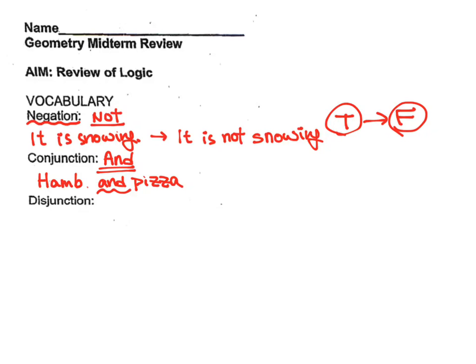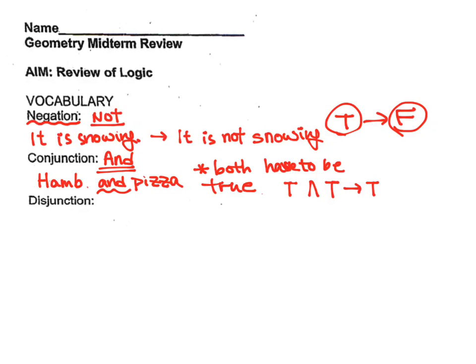In this case, in order for any conjunction to be true, both have to be true. So in other words, when we have the AND — the symbol for AND looks like an A — true AND true will get us true, but all the other combinations will get us false.